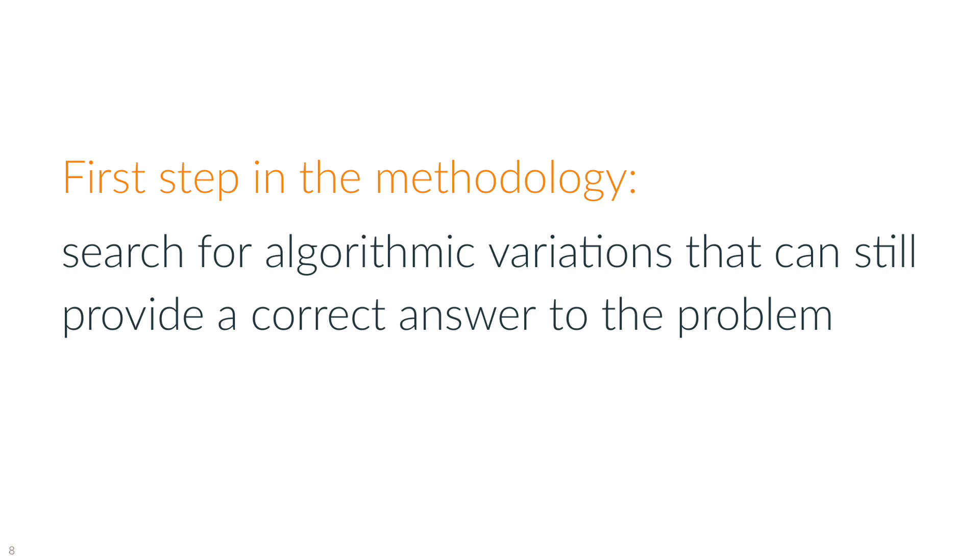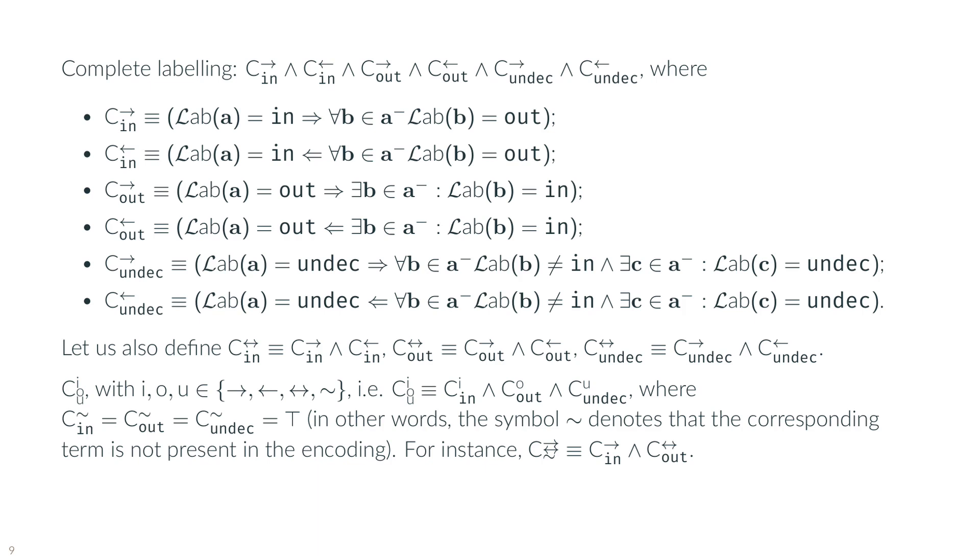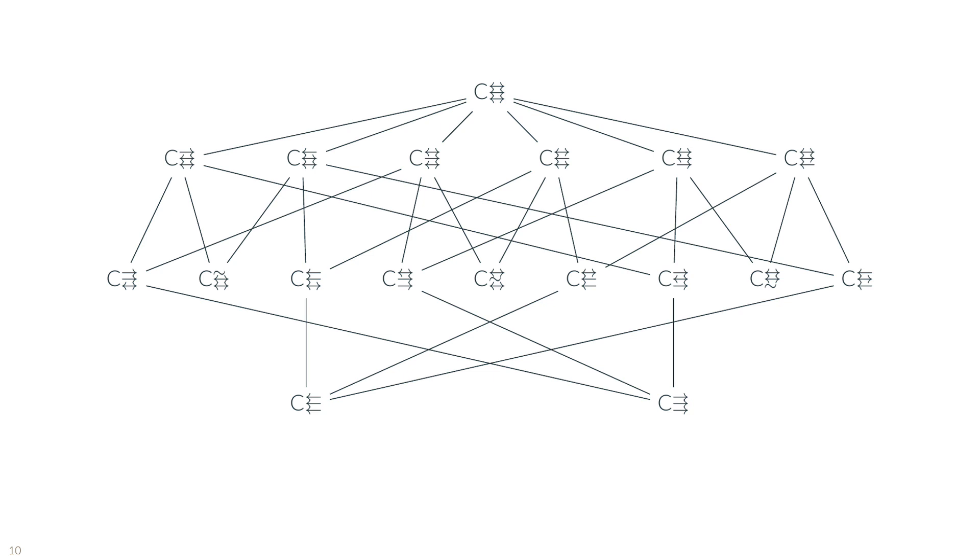The first step we used in designing our winning algorithm was to search for algorithm variations that can still provide a correct answer to a given problem. For instance, if we look at the constraints associated to the complete labelling, by adding information that each labelling must be a complete function, we can create a set of constraints, each of those is guaranteed to return a complete labelling.